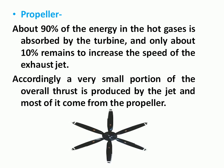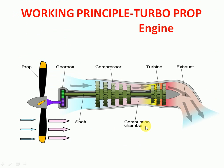Next, the propeller. About 90% of the energy in the hot gases is absorbed by the turbine, and only about 10% remains to increase the speed of the exhaust jet. Accordingly, a very small portion of the overall thrust is produced by the jet, and most of it comes from the propeller. This is the type of propeller used in the turbo propeller engine.